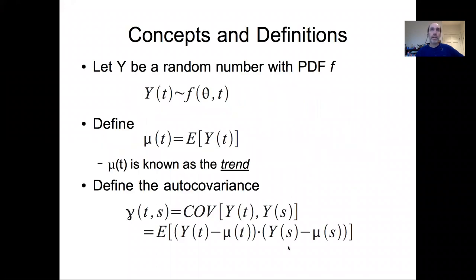Before I dive into some methods, I want to start with some concepts and definitions. First, let's imagine there's some variable Y that we're observing, and that Y is a probabilistic random number, a function of some parameters and time. So it's changing with time, it's explicitly a function of time, and the model may have additional parameters with it.